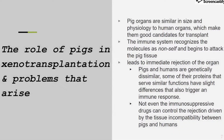The fifth pre-lab question asks about the role of pigs in xenotransplantation and the problems that arise. Since pig organs are similar in size and physiology to human organs, they are good candidates for transplant and would be readily available when needed. When pig organs are transplanted into humans, the immune system recognizes these molecules as non-self and begins to attack the pig tissue, leading to immediate rejection. Because pigs and humans are genetically dissimilar, some of their proteins that serve similar functions have slight differences that also trigger an immune response. Unfortunately, not even immunosuppressive drugs can control the rejection driven by tissue incompatibility between pigs and humans.